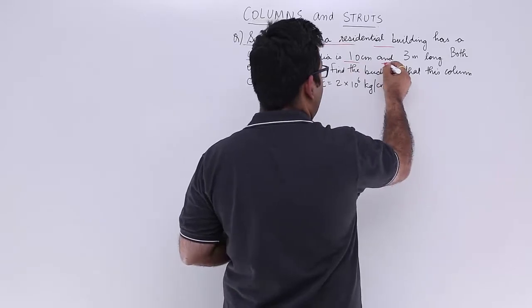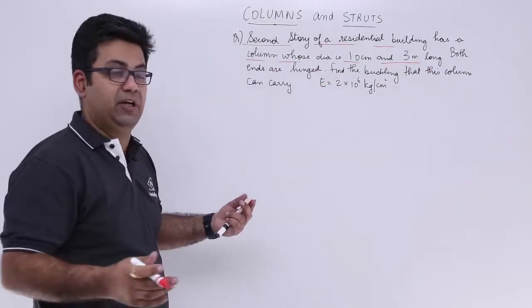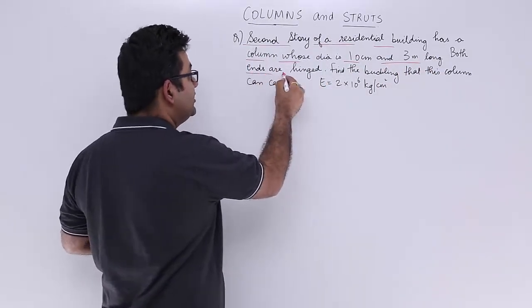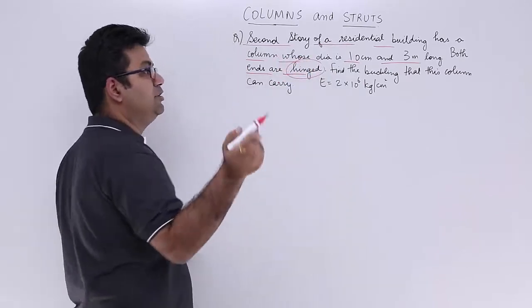Alright, so column diameter is 10 cm and the length of the column is 3 m. Both the ends are hinged. So this is the end condition given to you.